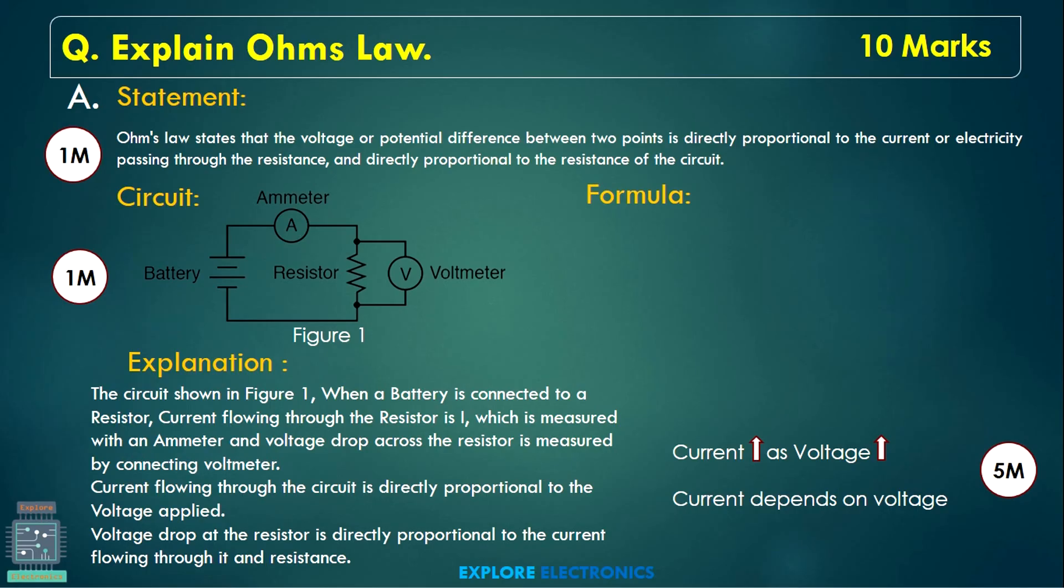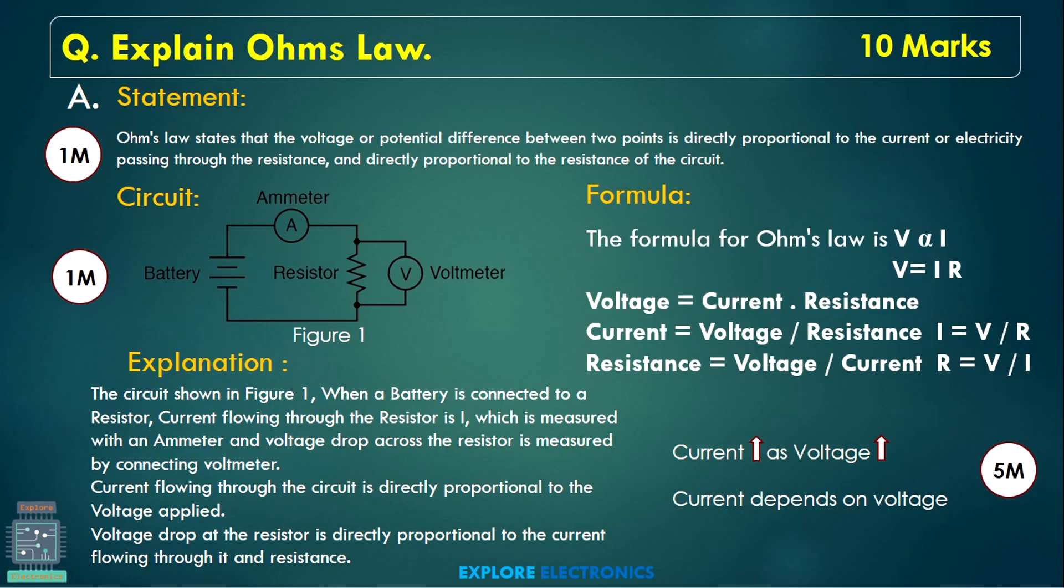We need to write something extra in the explanation and also with respect to the formula or the expression, the other formulas we can write which are supporting Ohm's law means V = IR supporting Ohm's law and we can also write I = V/R, R = V/I and also we say current and voltage are directly proportional and then current will be depending on the voltage and how the resistor is going to behave.